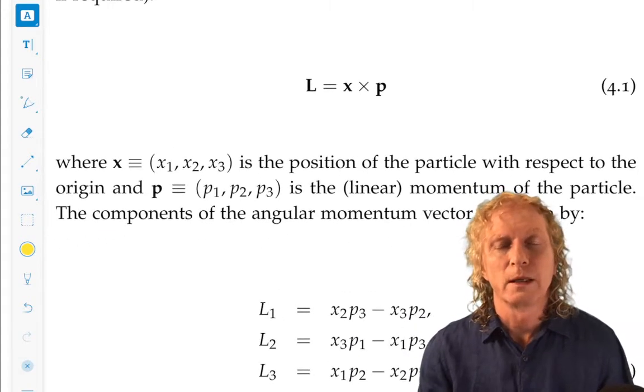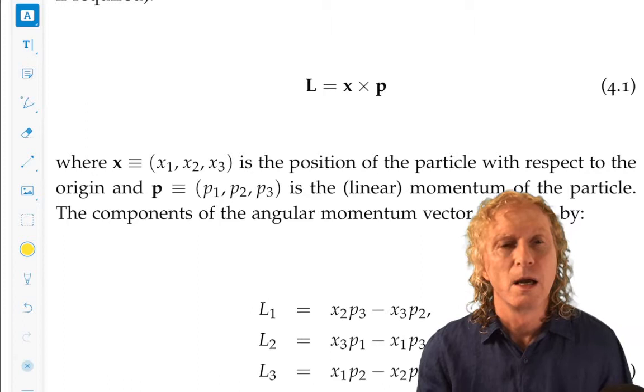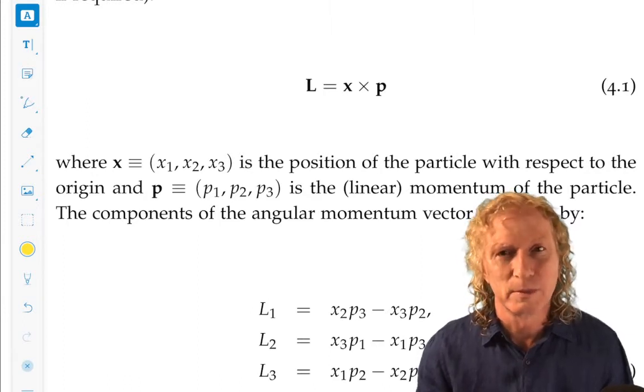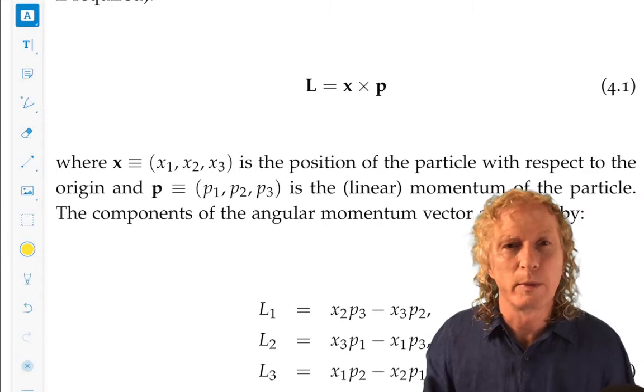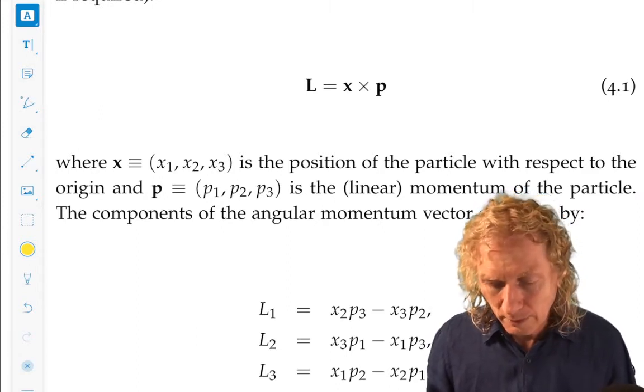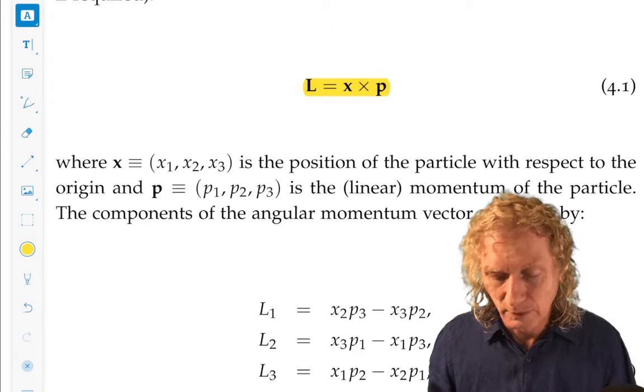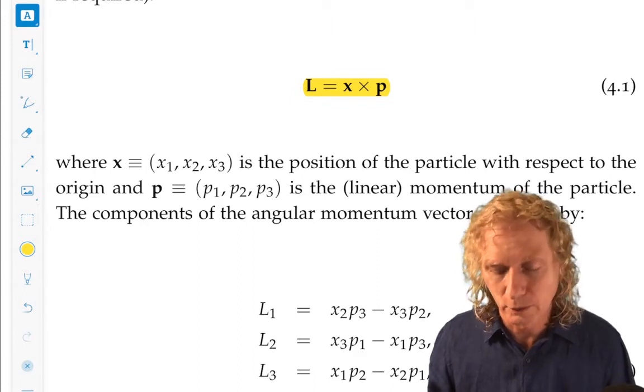So, angular momentum of a point of constant mass m about the origin... You always have to say angular momentum about which particular point... is given by this expression. X is a position vector from the origin to the particle. This is the vector cross product. These are three-dimensional vectors.